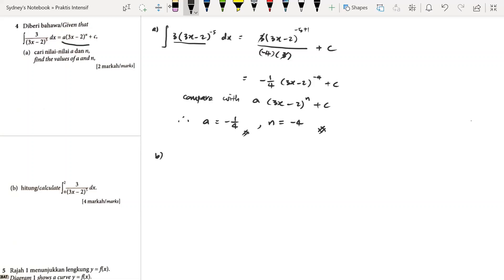Let's move on to part b. Now for part b, we have to calculate the value from 0 to 2 of 3 over (3x minus 2) raised to the power of 5 dx. After we integrate this, we will get this one. We shall use this.